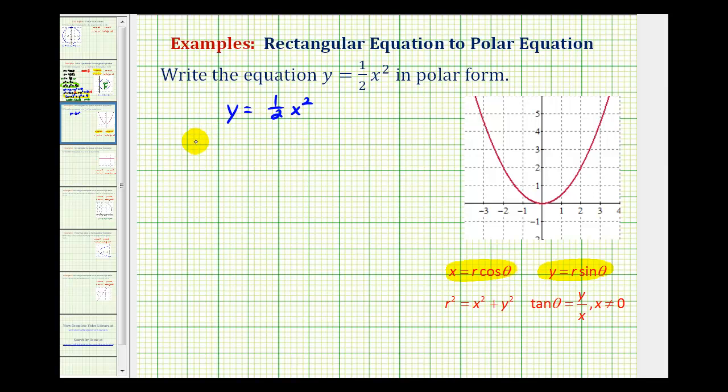So this would give us r sine theta is equal to one-half, and then since x is equal to r cosine theta, x squared would be equal to r squared cosine squared theta.